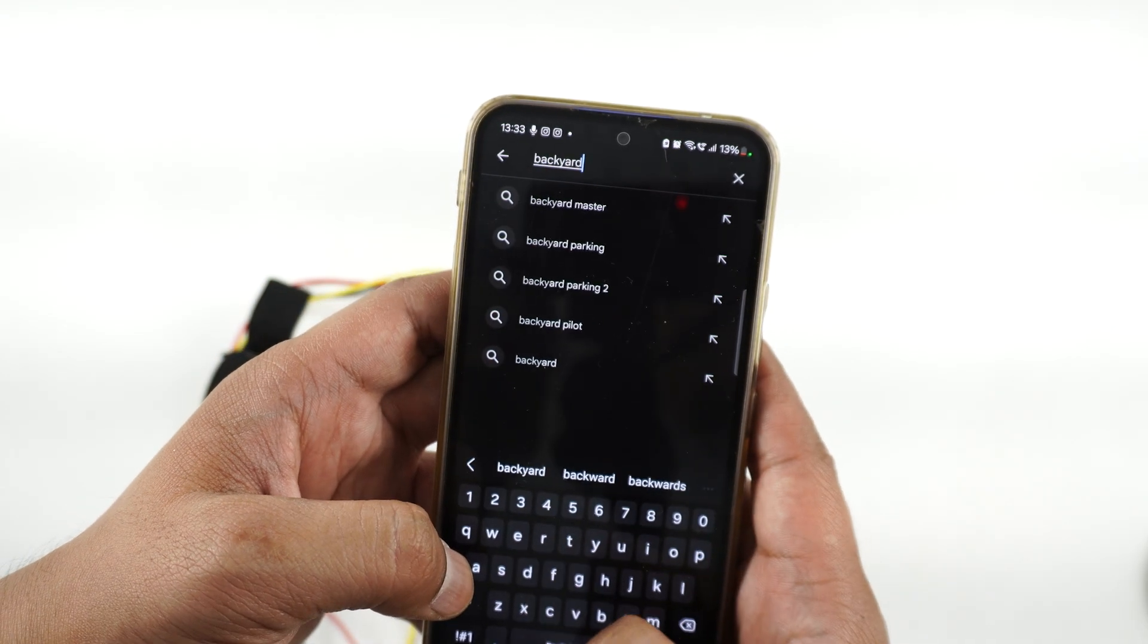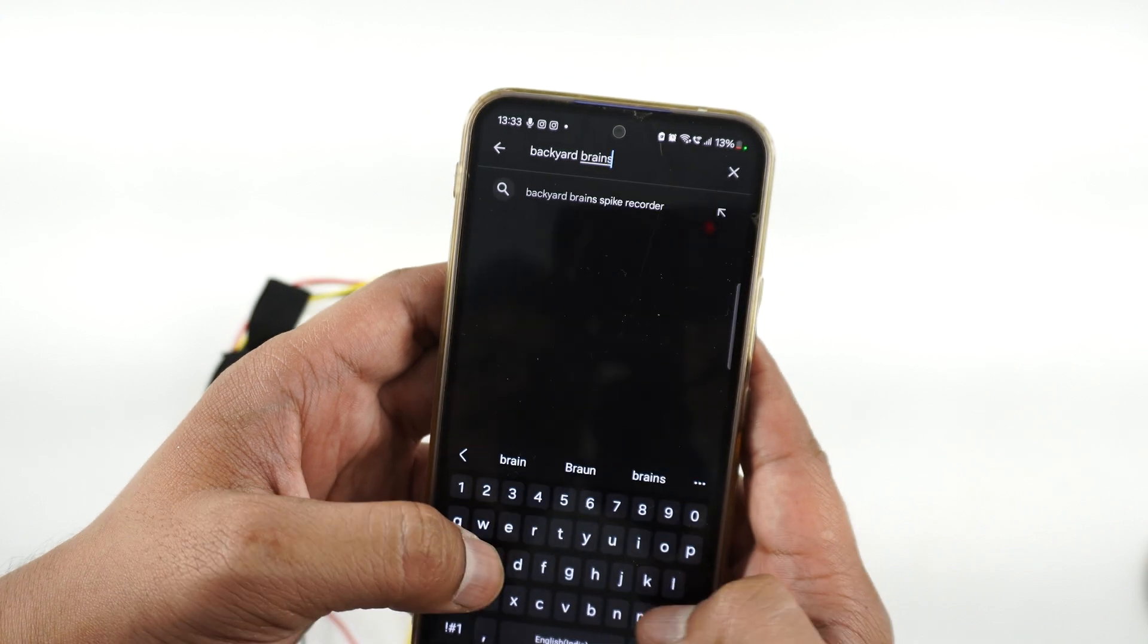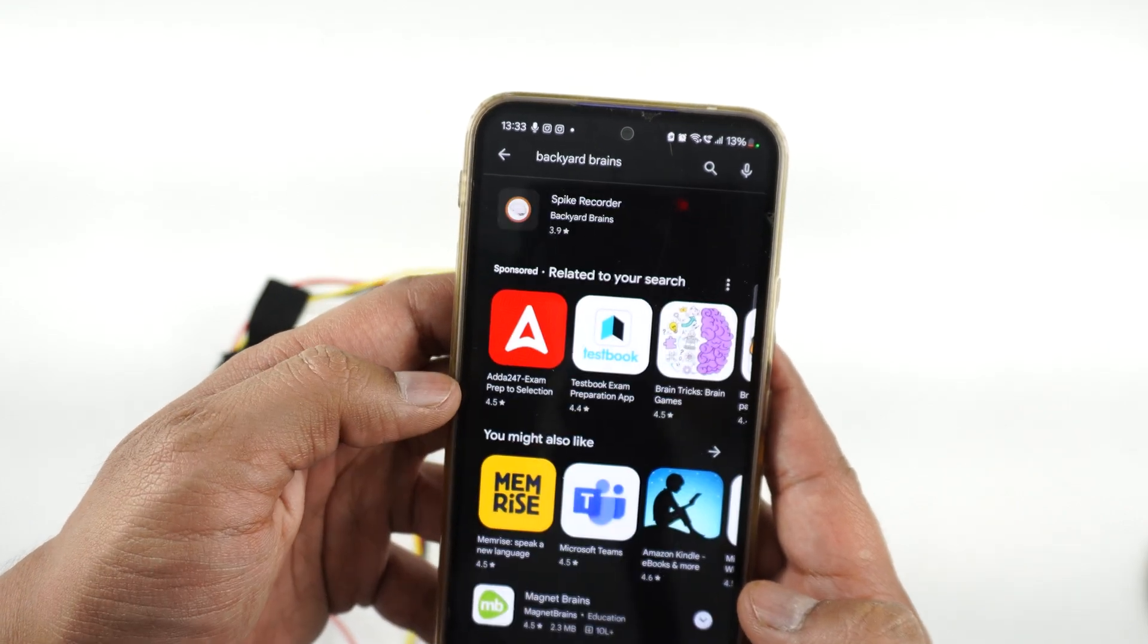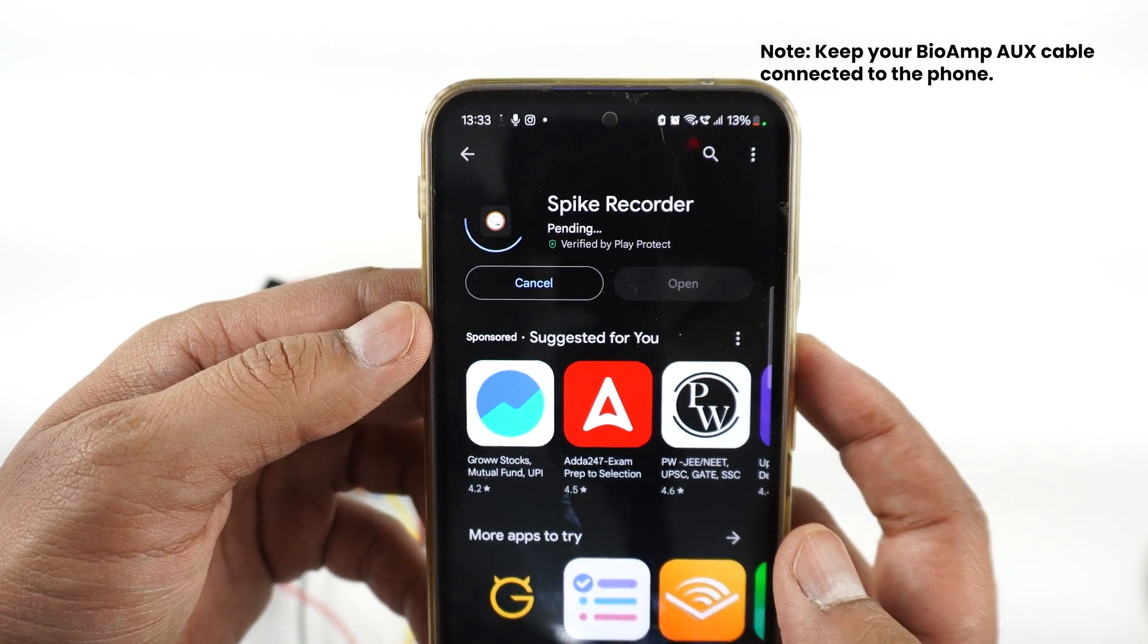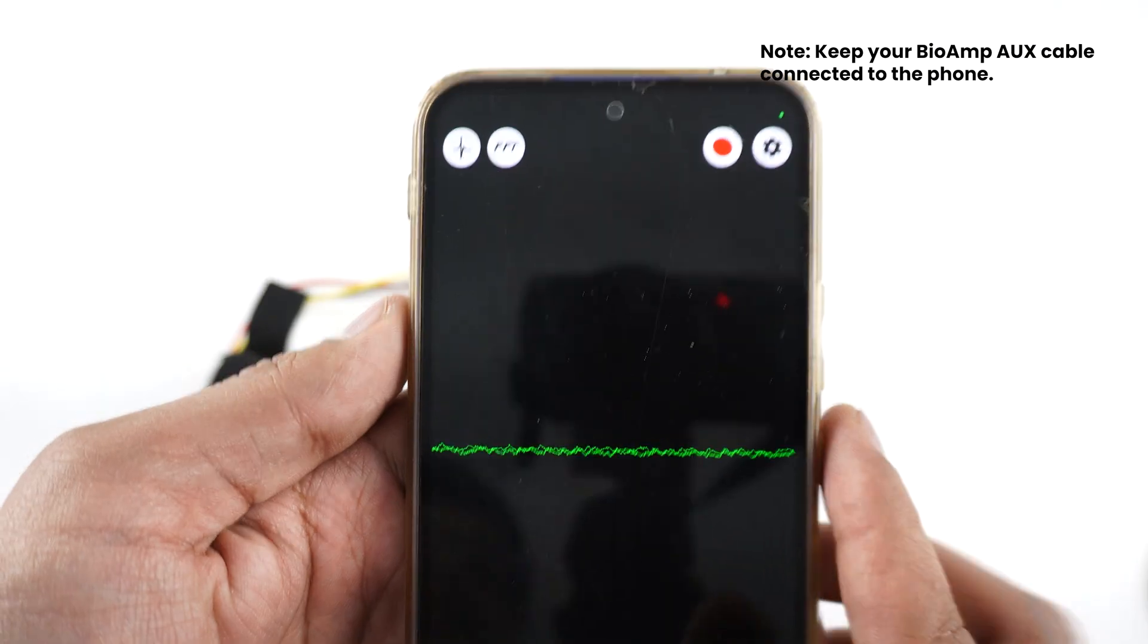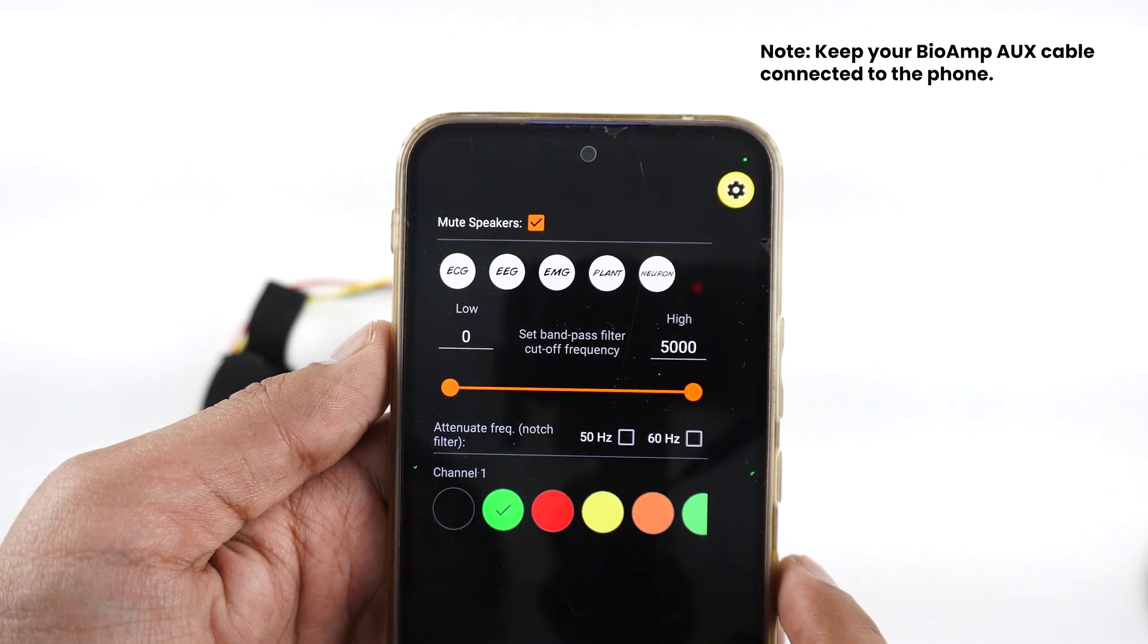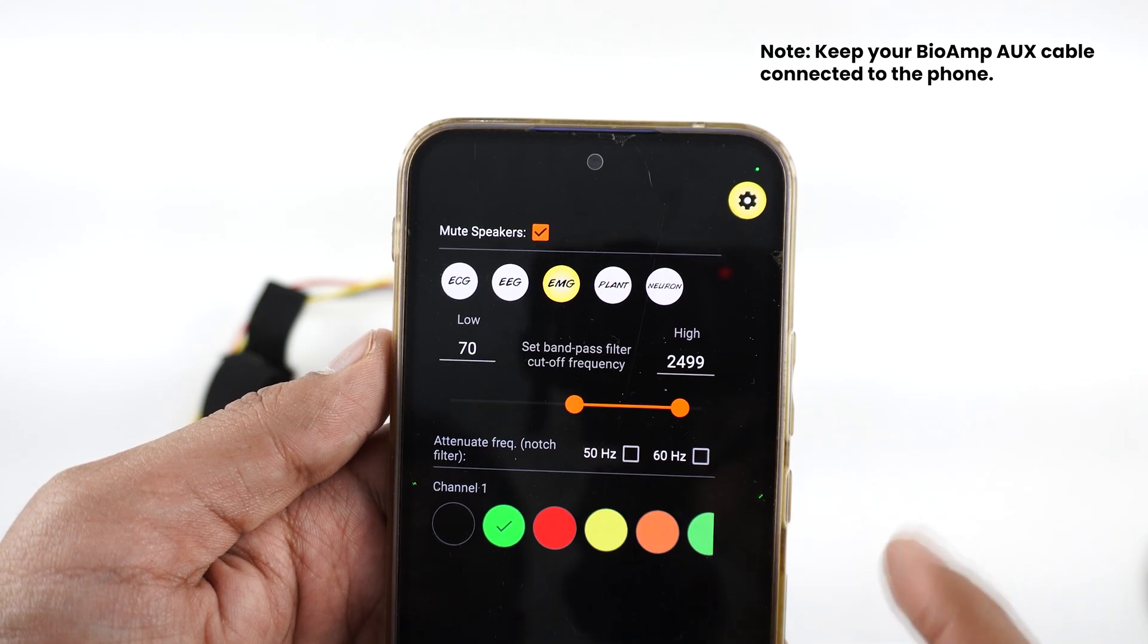The second option is to download Backyard Brains Spike Recorder app from Play Store or App Store depending on the mobile phone you are using. Now open the app, click the setting icon on the top right corner, and set the recording type to EMG.